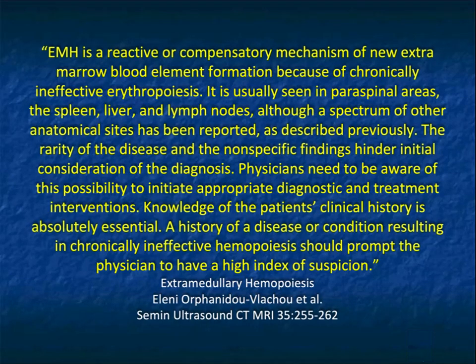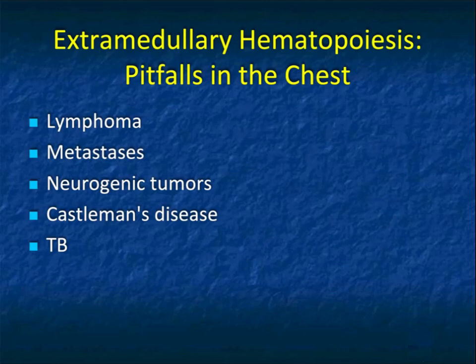History can be very helpful. If you know the patient has beta thalassemia, you'll be looking for extramedullary hematopoiesis. If the patient has abdominal pain and weight loss, you'll be looking for any pathology and perhaps consider lymphoma. So let's look at some pitfalls.